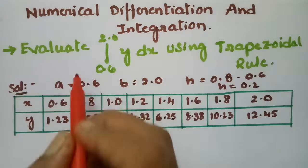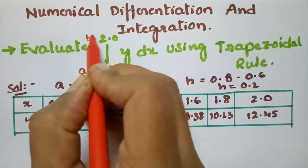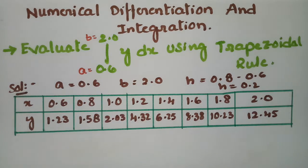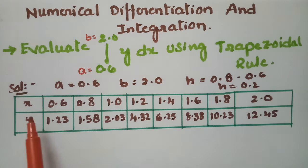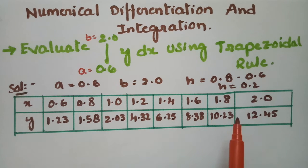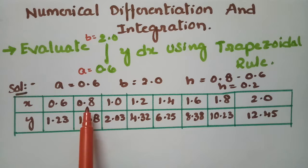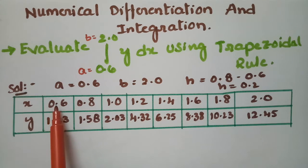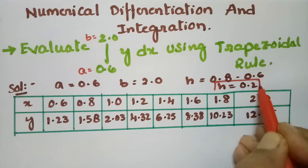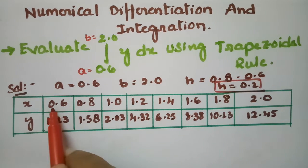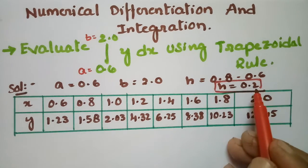Here our initial a value is given as 0.6 and b value is given as 2.0. Also given is a table of x values and y values. From this, the difference between x2 minus x1 gives the value of h. So h equals 0.8 minus 0.6, which equals 0.2.